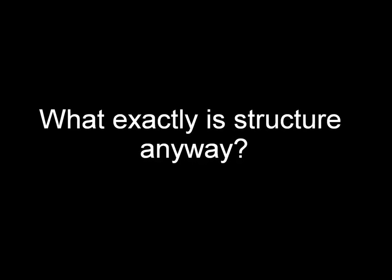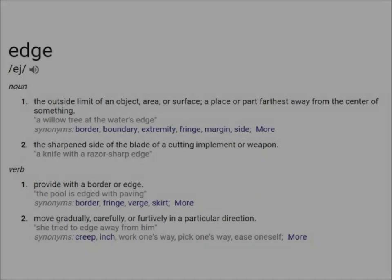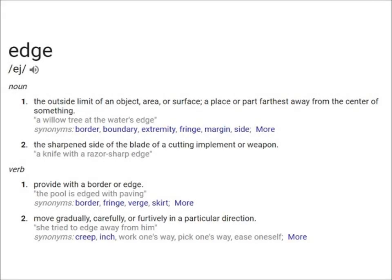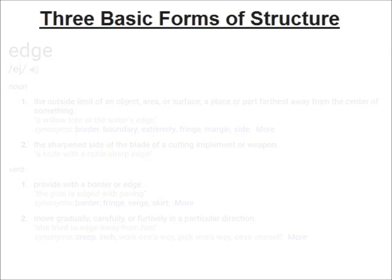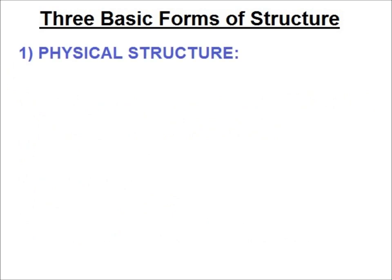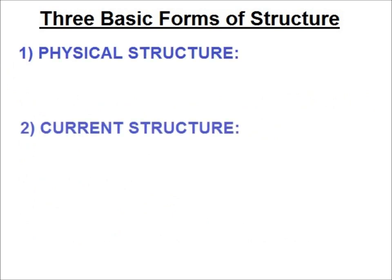Structure comes in many forms, but in its simplest form, all structure is nothing more than some sort of edge. Structure could be considered the border or edge between two differing states of water. The three basic forms of structure in my book are physical structure, current structure, and temperature structure.